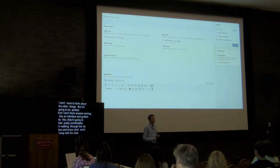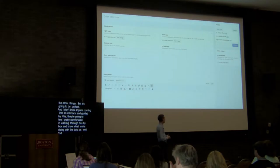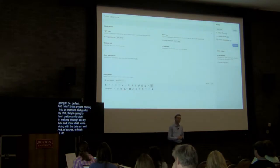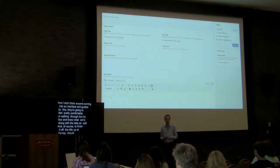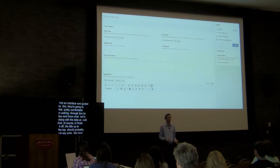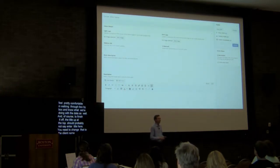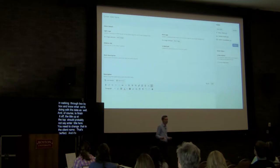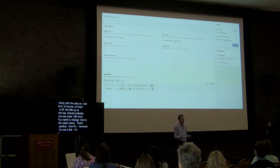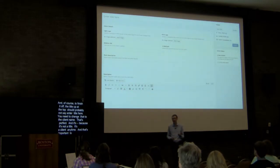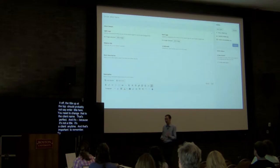If they do what the description says, it's going to be perfect. Anyone coming into an interface and guided by this is going to feel pretty comfortable just walking through box by box, and they're going to know what we're doing with the data as well. The 'Enter title here' at the top should not say 'Enter title here' — you definitely need to change that to, for example, 'Client name.' It's not a title, it's a client name. And that's important to remember. All these tiny details help us.